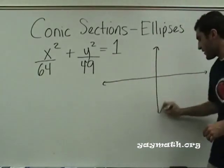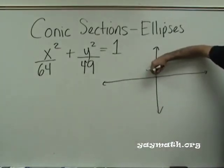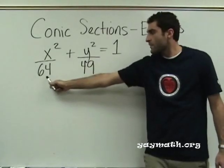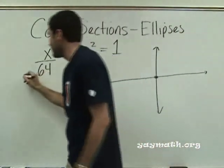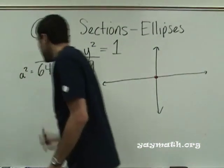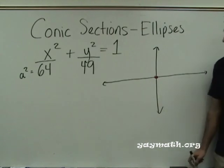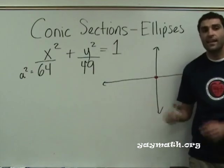The center is zero zero, so draw that and draw a point at zero zero, please. And here's how it works. We look at the value under x. Okay? Usually we call this a squared. Alright? The value under x is a squared. Eight. Eight. And so what is the value of a? Eight. Eight. Okay, the value of a is eight.